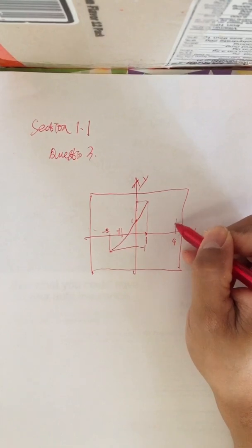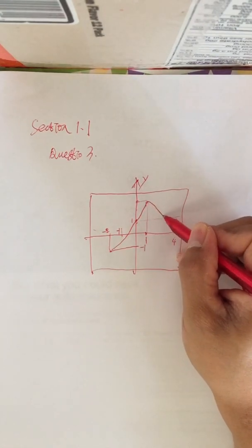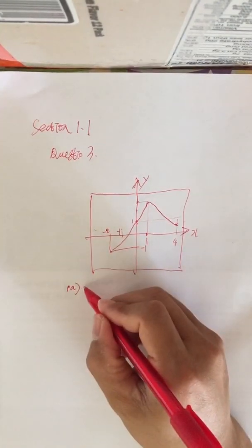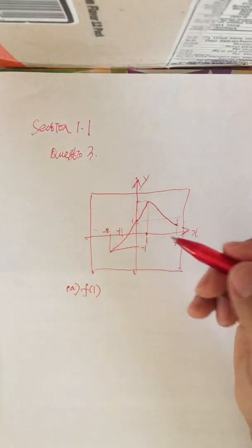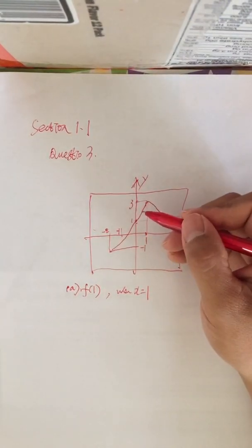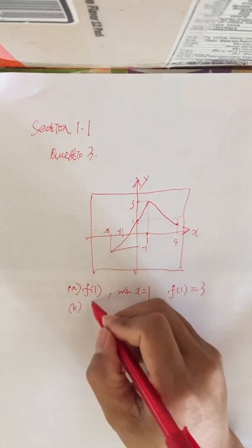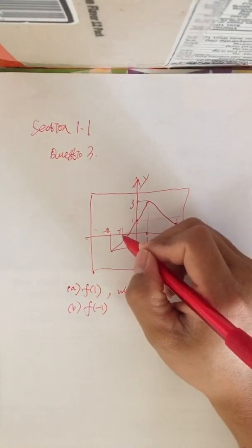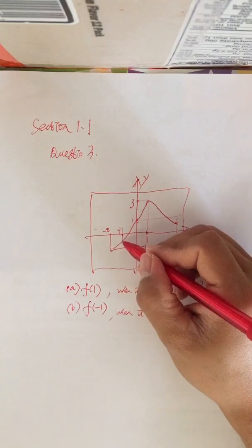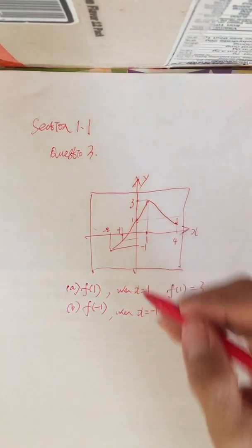The endpoint is less than 1 like this. Part (a): state the value of f(1). f(1) means when x equals 1. We can see here it is 3, so f(1) equals 3. Part (b): estimate the value of f(-1). When x equals negative 1, we cannot get the exact number, but we can estimate it's about one-third.